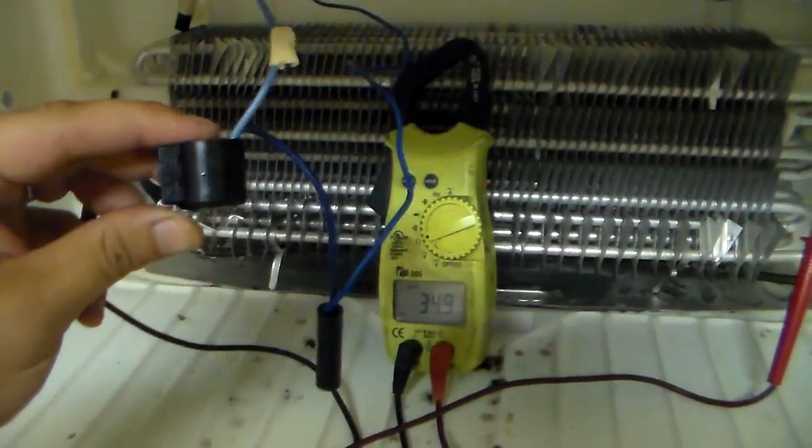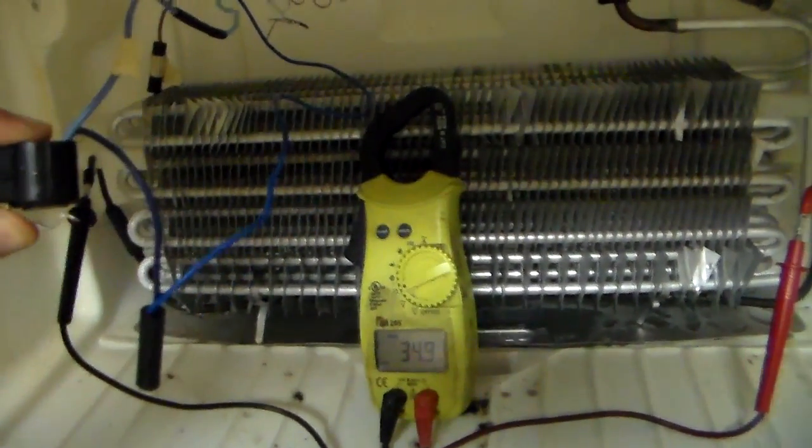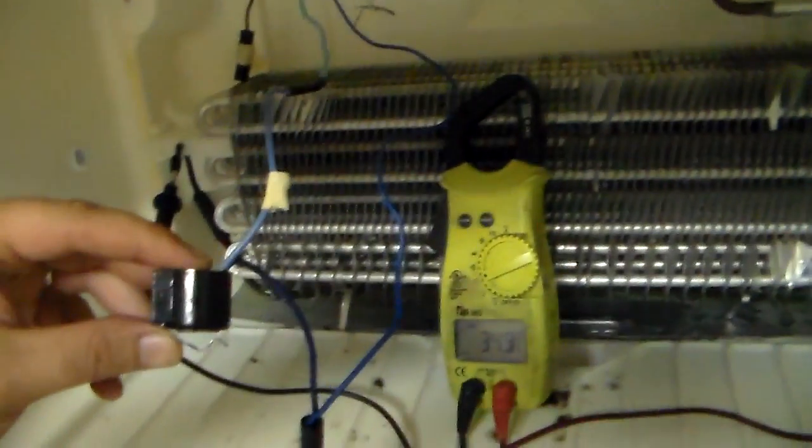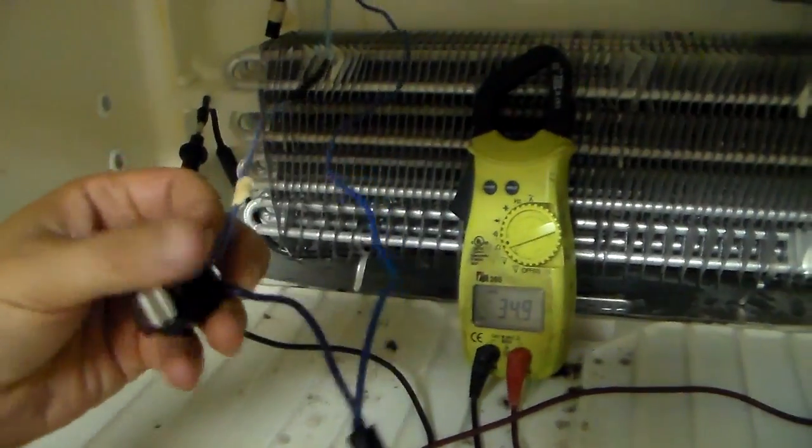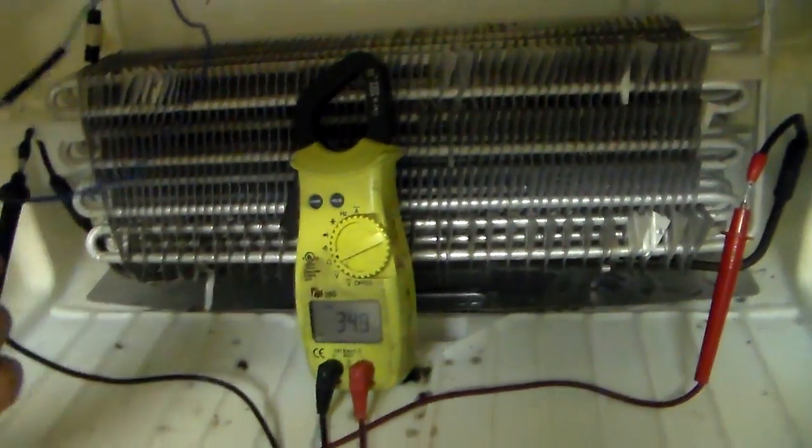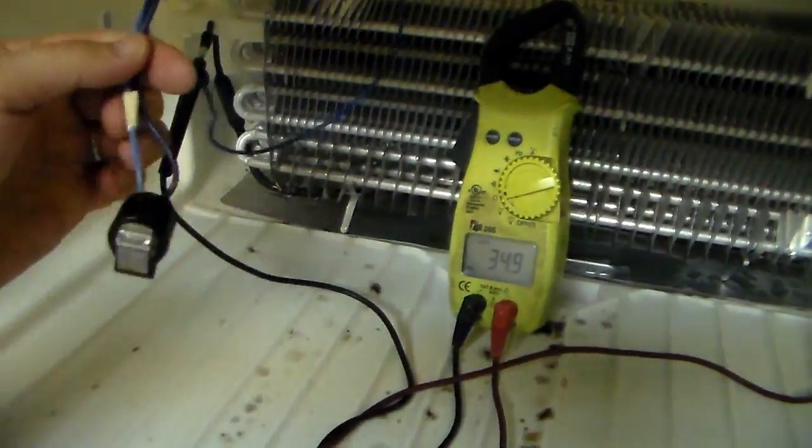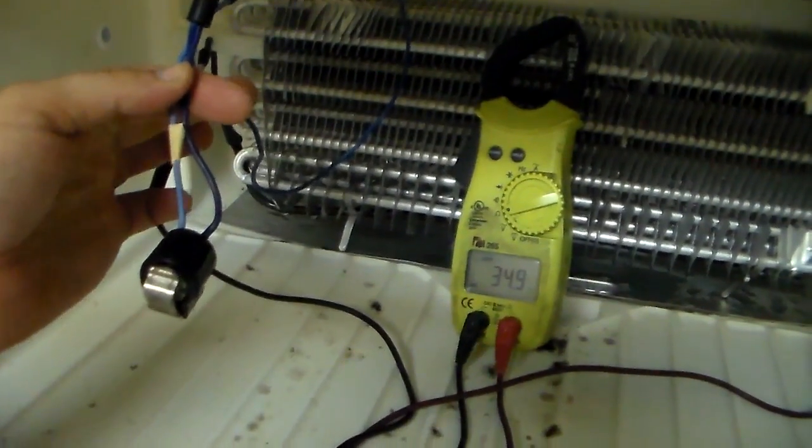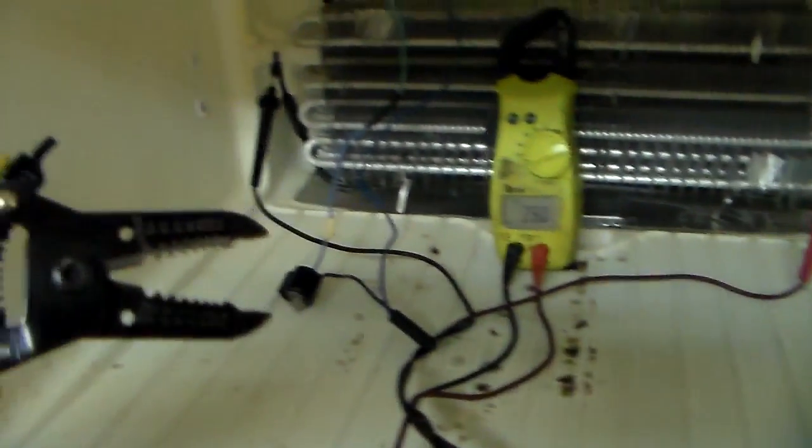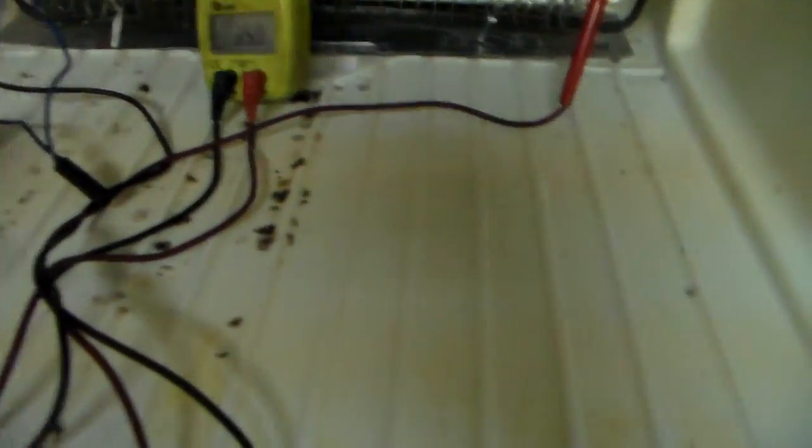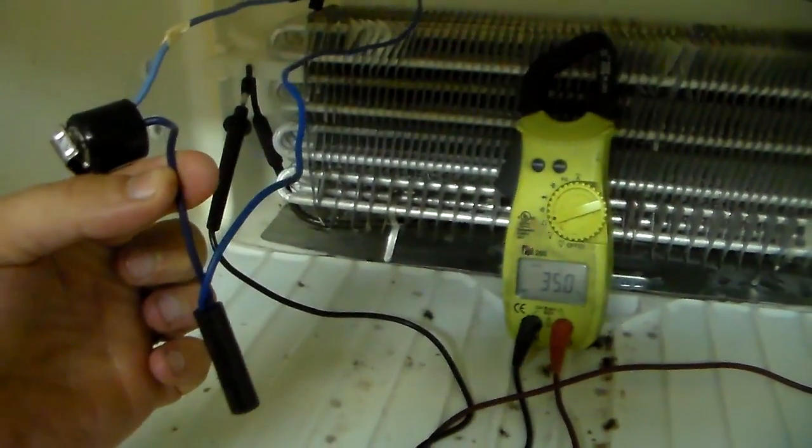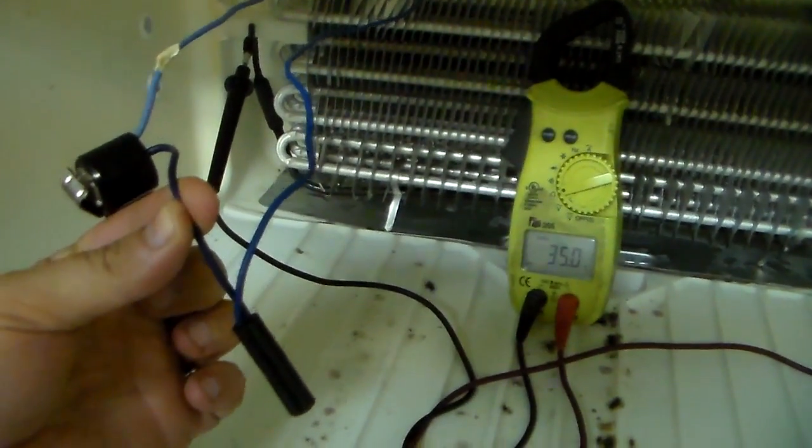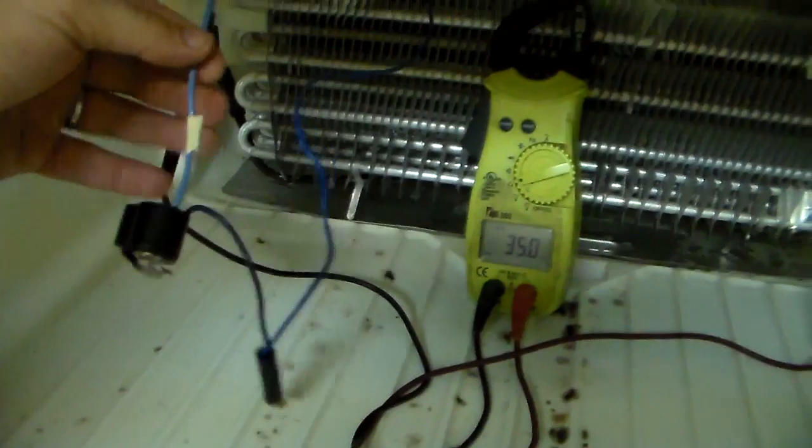Alright, so what I've done is I went ahead and unclipped the defrost thermostat off the top of the evaporator here. Now how this thing works, and the safest way for you to test this and the easiest way, is going to be to cut it off the wiring harness. Basically you want to get yourself a pair of wire snippers and cut it right in the middle, right about here, so you have enough room to buck connect these two wires back together. And you want to cut it a few inches up here, that way you have enough room to get yourself a couple buck connectors and put it back together.